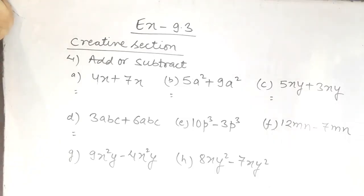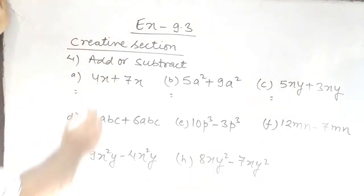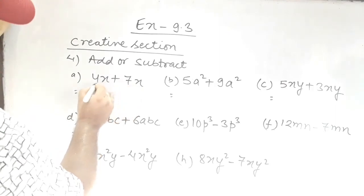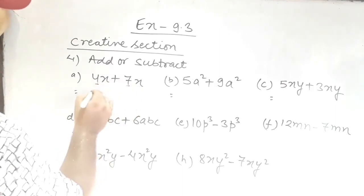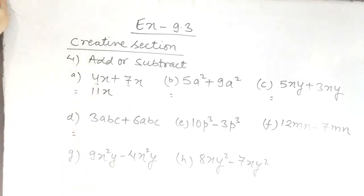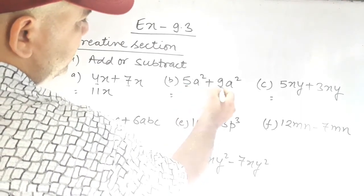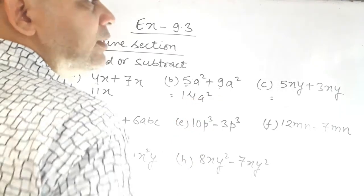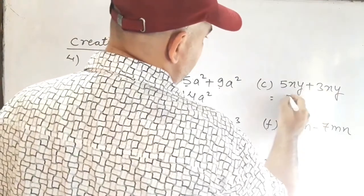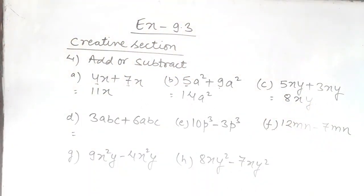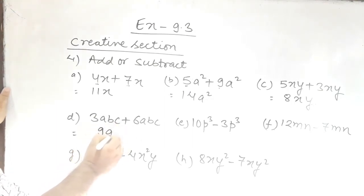Let's do Exercise 9.3, the creative section starting from question number 4. Here we have to add or subtract according to the given question. These two are like terms, so they can be added: 4 plus 7 results in 11x. Next: like terms, so 5 plus 9 equals 14a squared. Likewise: 5 plus 3 equals 8xy. And: 6 plus 3 equals 9abc.